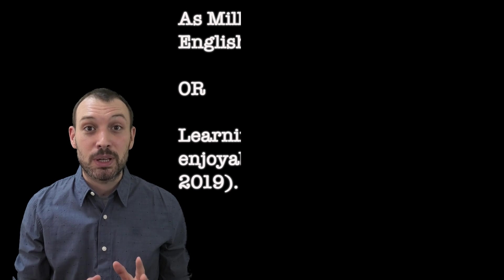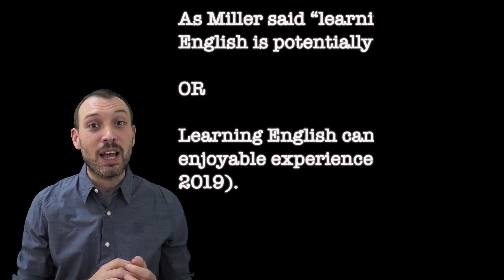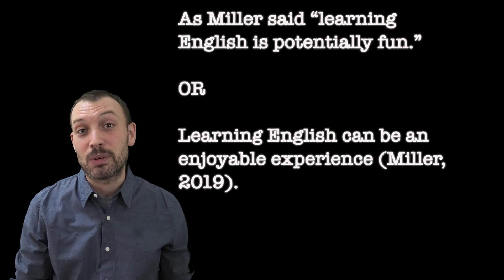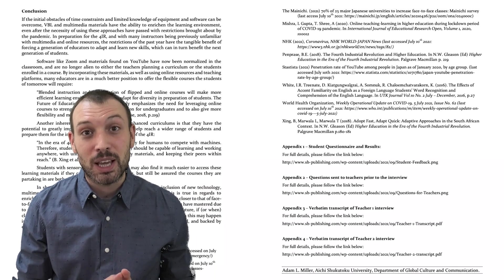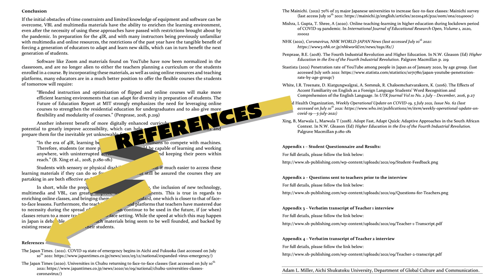Another very common style of referencing is in-text quotations or in-text citations. If you've read a book or article and you agree or disagree with the opinion there, you might want to briefly explain what that person's opinion or thoughts were. For example, you might write 'as Miller said,' and then explain what they wrote about or researched. In this case, you must include the person's name and the year you are referring to throughout the text.